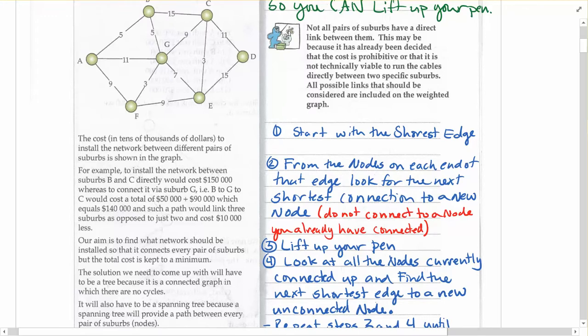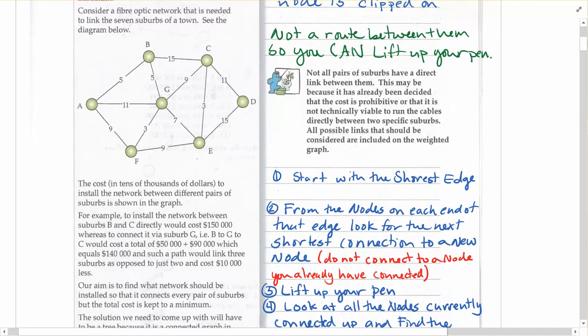If we take a look at this network, the problem that they're giving us here as an example, we're trying to lay down a fiber optic cable for all the different suburbs, and so you just need to make sure the cable reaches each town somehow, it doesn't matter from where, just as long as each little suburb has a cable going to it. And the different connections that are available to you cost different amounts.